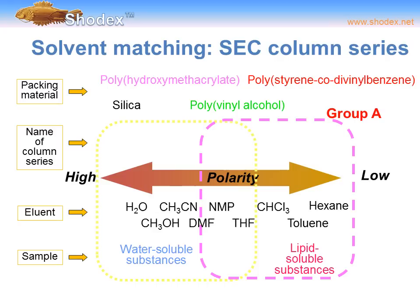On the right of the diagram, we see lipid-soluble substances — those dissolved in chloroform, toluene, hexane, or similar solvents. These are best suited for polymer-based packing materials such as polystyrene-codivinyl benzene. However, they are also ideal for polyvinyl alcohol. Polyvinyl alcohol is suited for both water-soluble and lipid-soluble substances, which is one of the advantages of polymer-based packing materials — they can be used for just about any type of SEC separation.